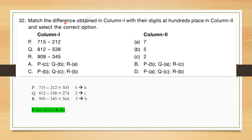Question number 32: Match the difference obtained in column 1 with their digit at 100s place in column 2. P: 715 minus 212 = 503, 100s digit is 5, matches B. Q: 812 minus 538 = 274, 100s digit is 2, matches C. R: 909 minus 345 = 564, 100s digit is 5, matches B. So P→B, Q→C, R→B. Correct option is option C.